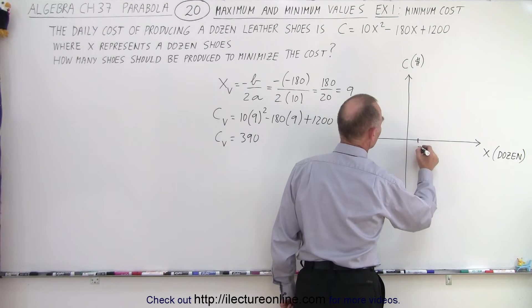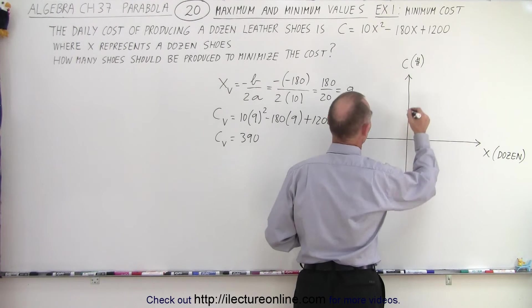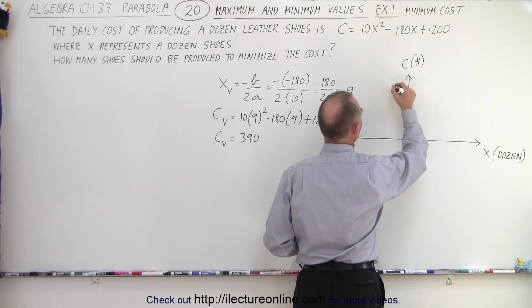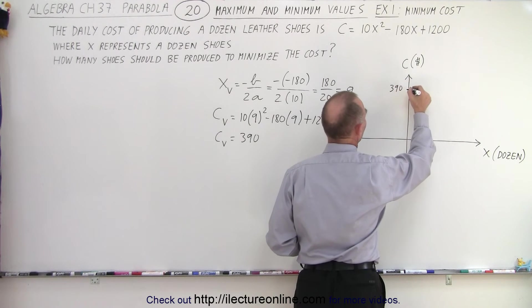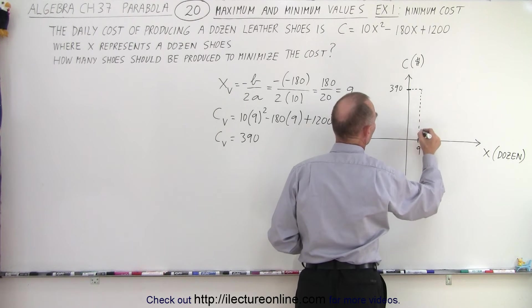And when c sub v equals 390, let's plug it over here. That would be 390. And there we go.